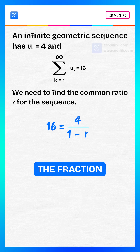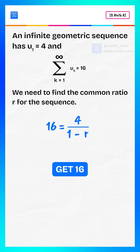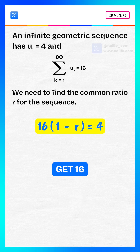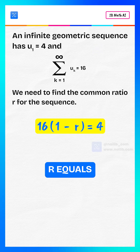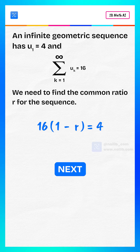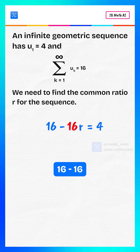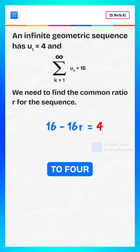Now we clear the fraction. We multiply both sides by 1 minus r and we get 16 multiplied by 1 minus r equals 4. Next, we expand the left side: 16 minus 16r equals 4.